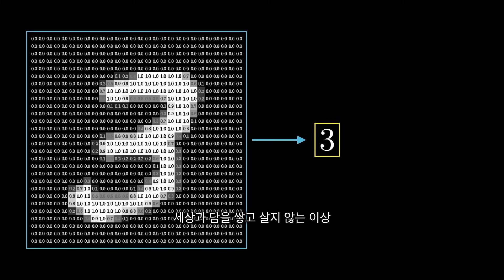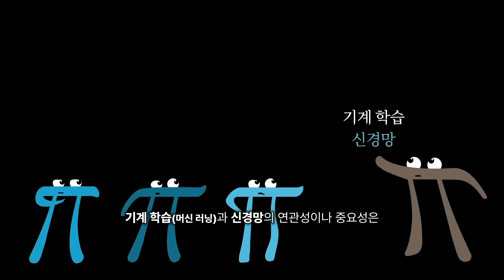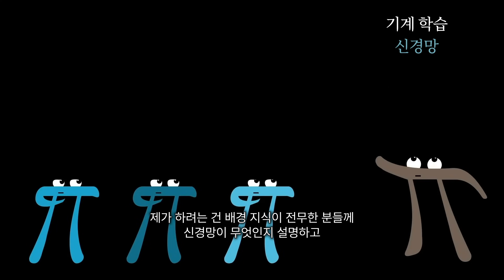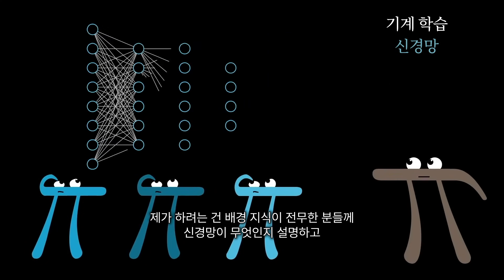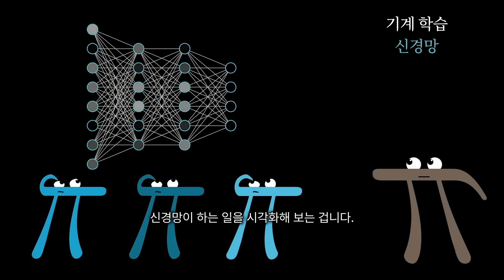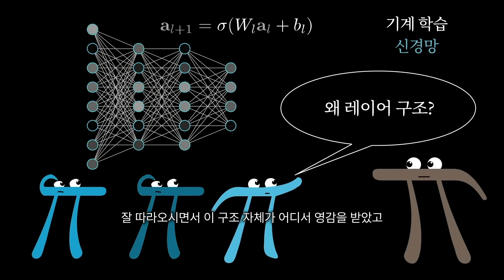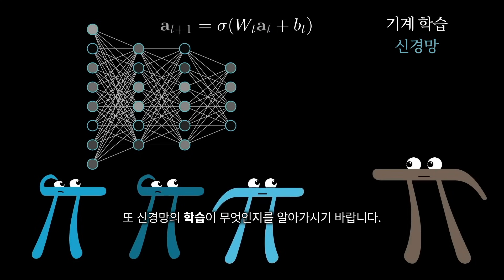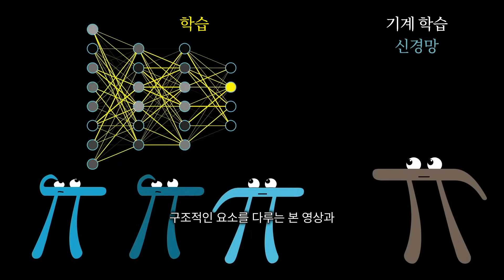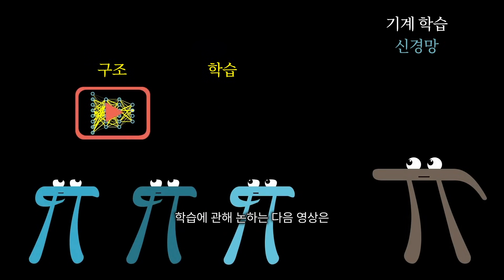Unless you've been living under a rock, I think I hardly need to motivate the relevance and importance of machine learning and neural networks to the present and to the future. But what I want to do here is show you what a neural network actually is, assuming no background, and to help visualize what it's doing — not as a buzzword, but as a piece of math. My hope is just that you come away feeling like the structure itself is motivated, and to feel like you know what it means when you read or hear about a neural network quote-unquote learning. This video is just going to be devoted to the structure component of that, and the following one is going to tackle learning.